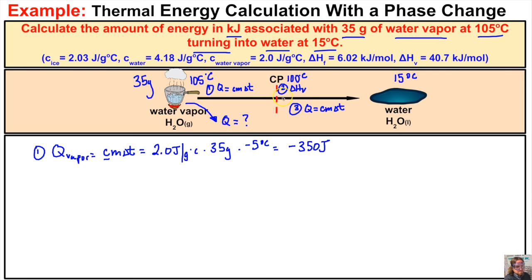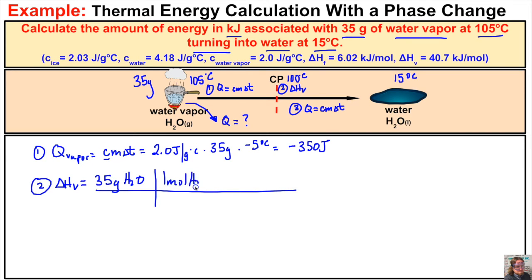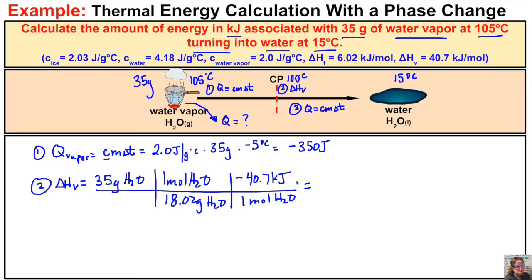At 100 degrees Celsius — the condensation point — we now calculate the heat of vaporization, the energy needed to turn water vapor into water. We take the mass of 35 grams of water and convert to moles: one mole of H₂O is 18.02 grams of H₂O. Then we multiply by the heat of vaporization for water, which is 40.7 kilojoules per mole. Since water vapor is condensing into water, the sign must be negative. So: 35 ÷ 18.02 × negative 40.7 = negative 79.1 kilojoules.